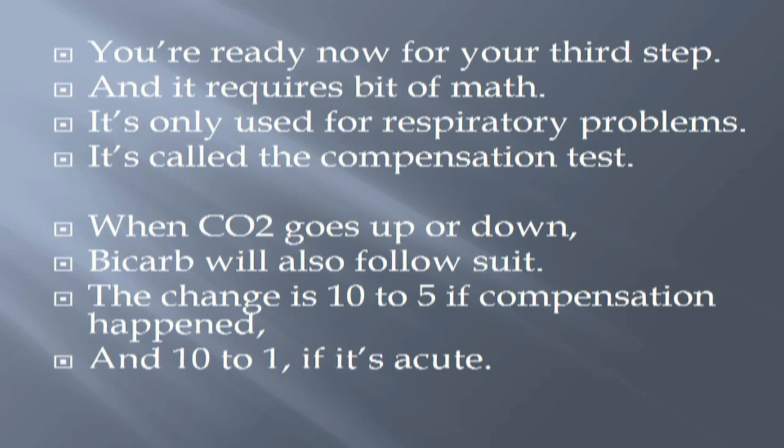You're ready now for your third step, and it requires a bit of math. It's only used for respiratory problems — it's called the compensation test. When CO2 goes up or down, bicarb will also follow suit. The change is 10 to 5 if compensation happened, and 10 to 1 if it's acute.